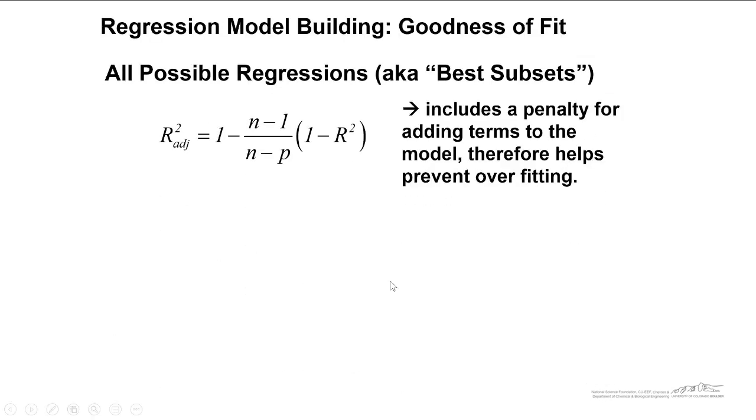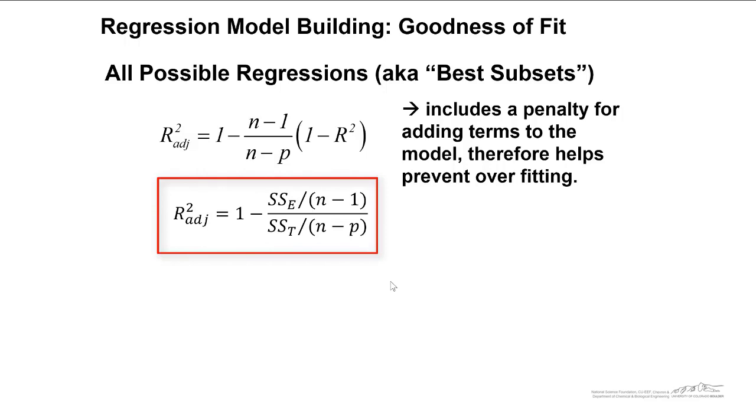Now when we're looking at this, there's a couple of parameters that we use in order to decide or choose the best model. We can use our adjusted r squared. This includes a penalty for adding a term to the model, as you guys know. Therefore, it helps prevent overfitting. By the way, this is just another way to write this equation. You've probably seen this bottom one before.